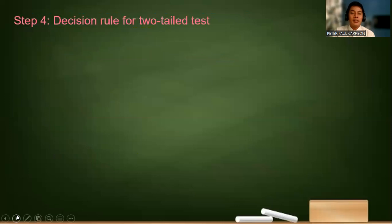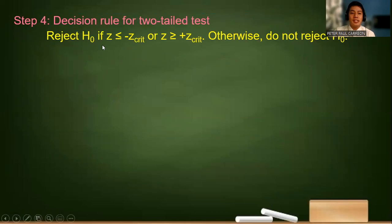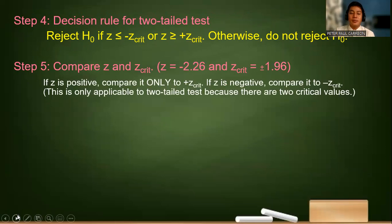Next, the decision rule. So we reject the null hypothesis if z is less than or equal to negative z or the z value is greater than or equal to positive z critical. Otherwise, we reject the null hypothesis.